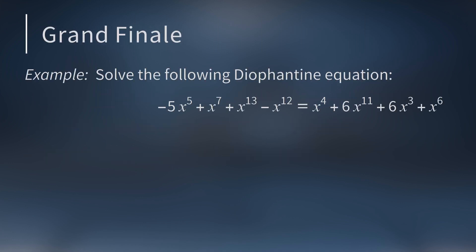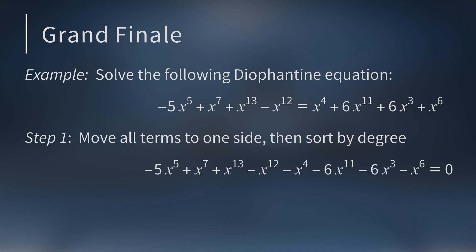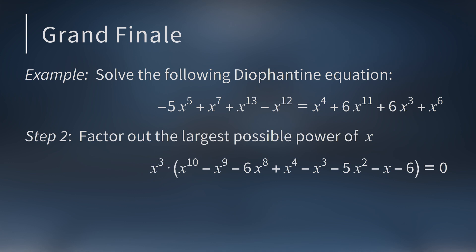As a final example, let's solve this Diophantine equation. First, move all the terms to one side. Then, sort this polynomial by degree so it's in standard form. Next, factor out the largest power of x possible. In this example, that's x³. So x = 0 is a solution to this Diophantine equation.